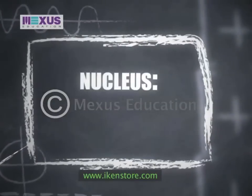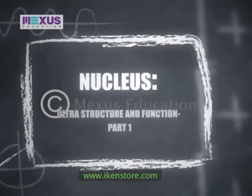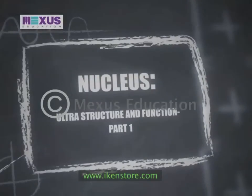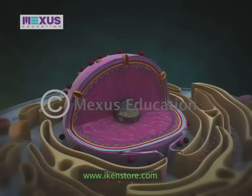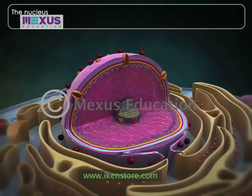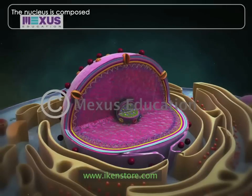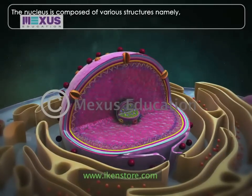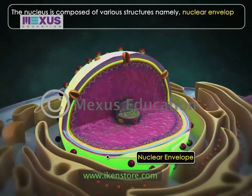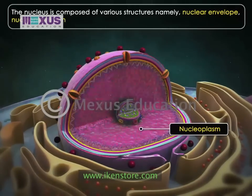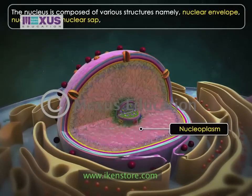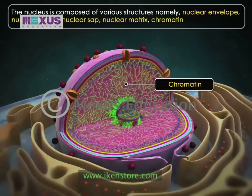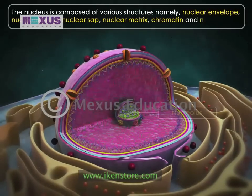Nucleus: Ultrastructure and Function, Part 1. The nucleus is composed of various structures, namely: nuclear envelope, nucleoplasm or nuclear sap, nuclear matrix, chromatin, and nucleolus.